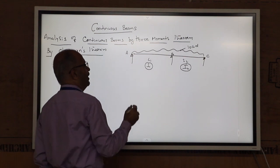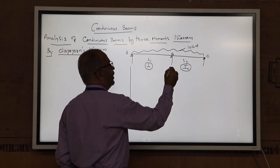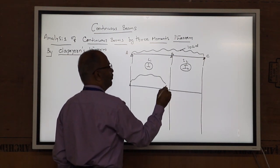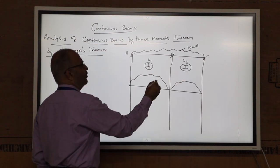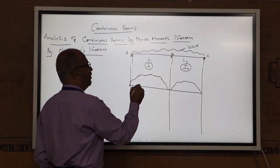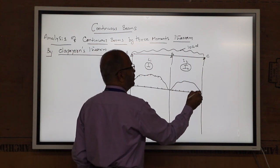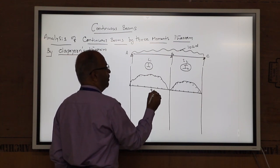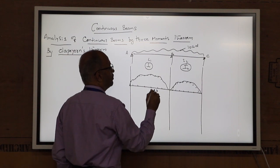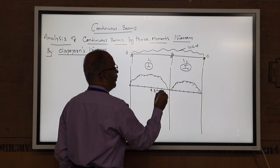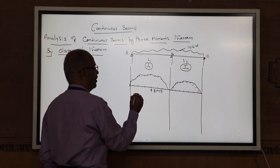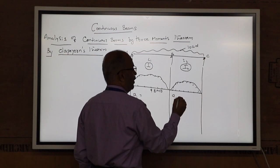Now, let some loading be applied. If you take the free bending moment diagram — the free BMD — this is the free bending moment diagram of span AB as well as span BC. Let us say the area of the free BMD for span AB is A1, and the area for span BC is A2.